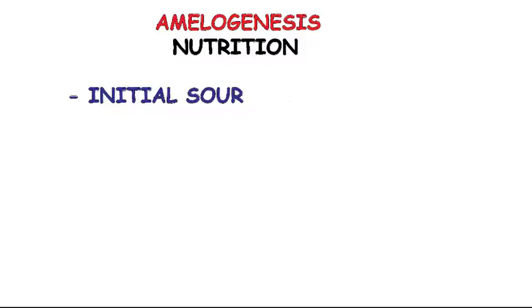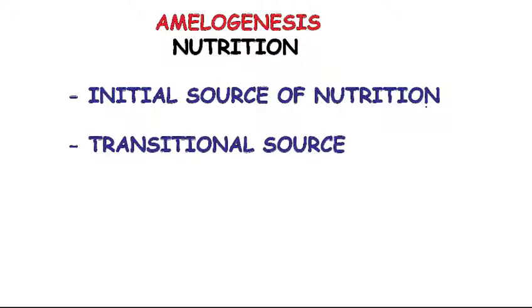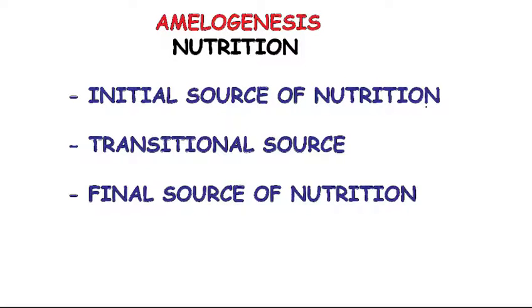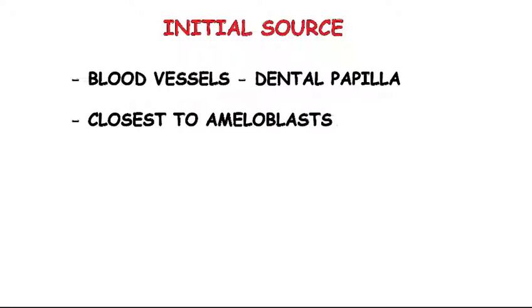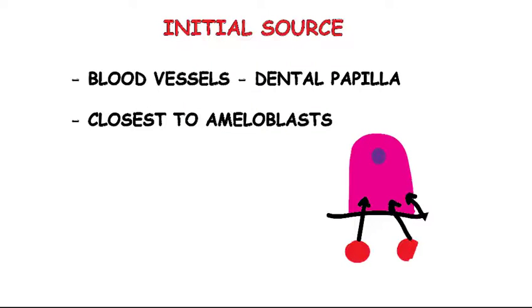The first one is the initial source of nutrition, i.e. the source before the layer of hard tissue is formed; the transitional source, the source just after the hard tissue is formed; and the final source of nutrition, i.e. the source from which the ameloblast derives its nutrition for the entire life after the hard tissue is formed. Before the dentine formation begins, the initial source of nutrition for the ameloblasts or the inner enamel epithelial cells is from the blood vessels of the dental papilla, as they are closest to the ameloblasts and the nutrition can be easily derived across the basement membrane.